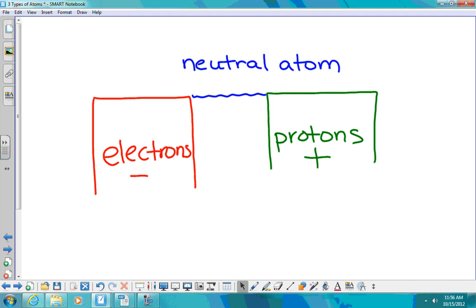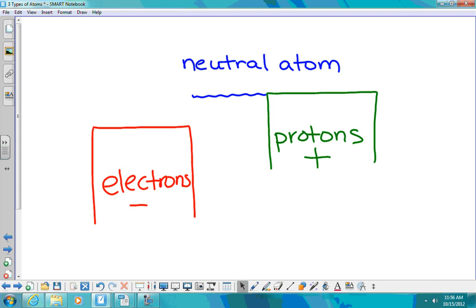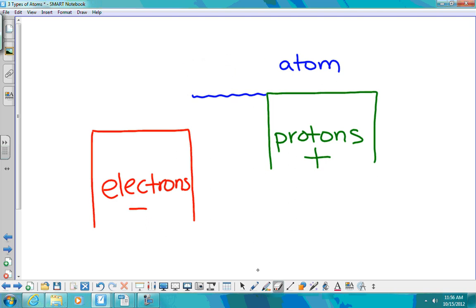But if I take the electrons and we take away an electron, we no longer are equal. But now we've become what kind of atom. I take away negative, so now I have more plus or protons than I do electrons. We now have a positive ion.